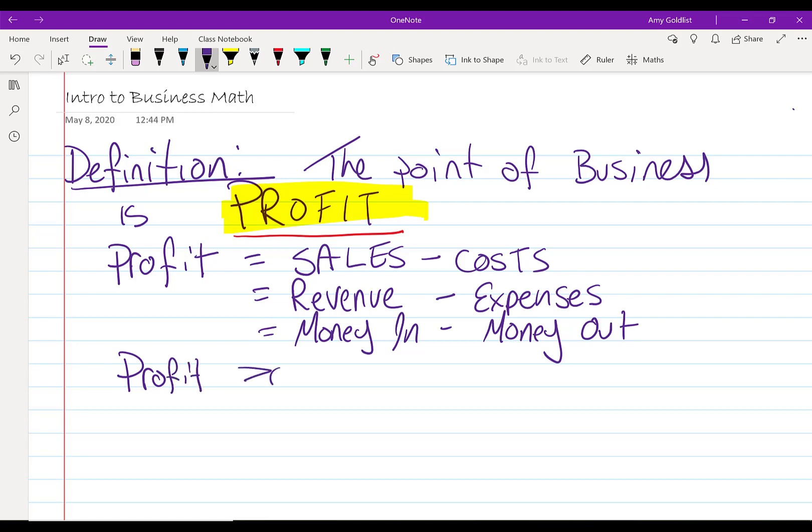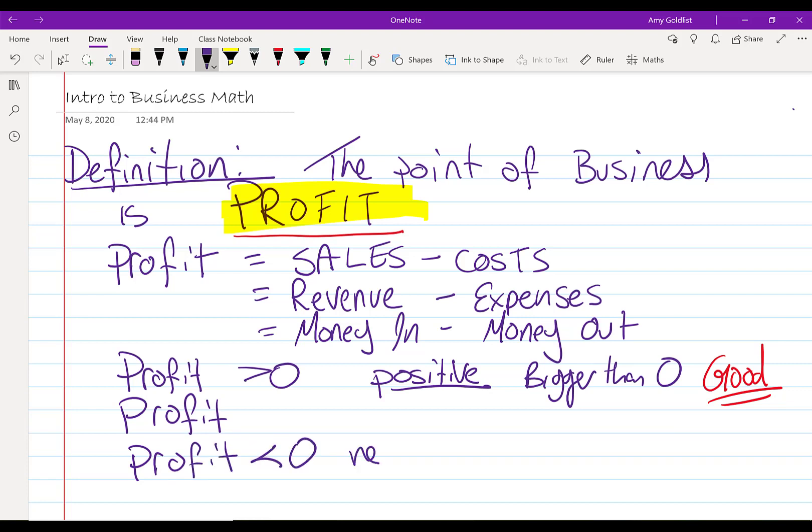What do we know about profit? When profit is a positive number, that means bigger than zero, that is a good thing. On the other hand when profit is less than zero, that's a negative number. I'm going to write that that is less than, that is going to be bad.